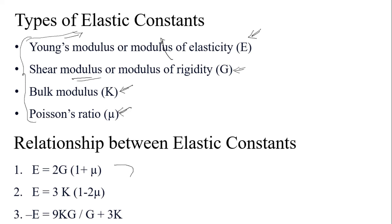The key relationships between elastic constants are: E = 2G(1 + mu), E = 3K(1 − 2mu), and E = 9KG / (G + 3K). These three relations are important to keep in mind.